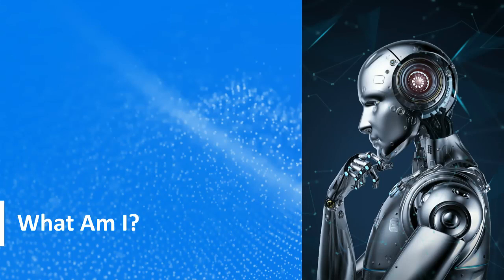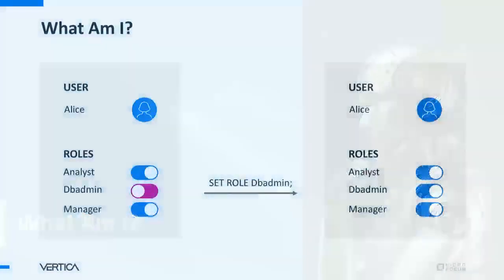Now over to Chris for more on identity and authorization. So we're a Vertica user and we've connected to Vertica — but once we're in the database, who are we? In Vertica, the answer is principles: users and roles, which are like groups in other systems. Since roles can be enabled and disabled at will and multiple roles can be active, they're a flexible way to use only the privileges you need in the moment. For example, Alice has dbAdmin as a role with elevated privileges she probably doesn't want active all the time, so she can set the role and add it to her identity set.